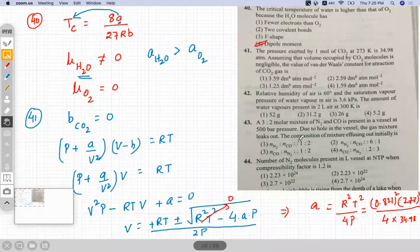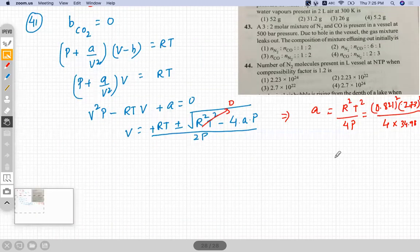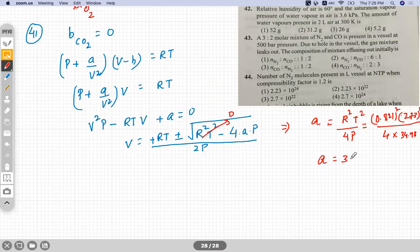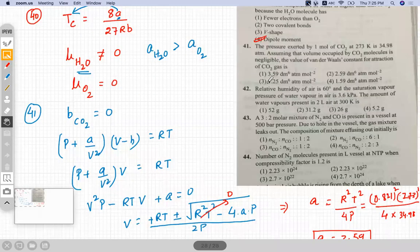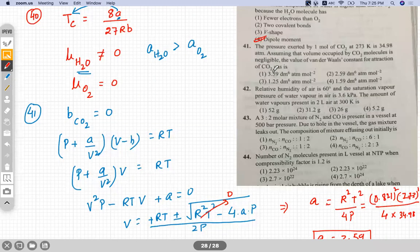And the value of A you will get here is 3.6, around 3.6 you will get 3.59. So which option is correct? Option A. This is correct here.